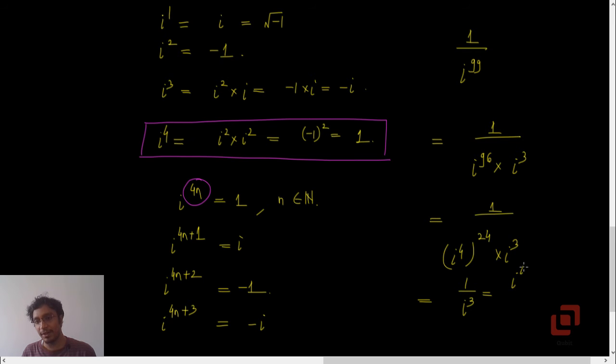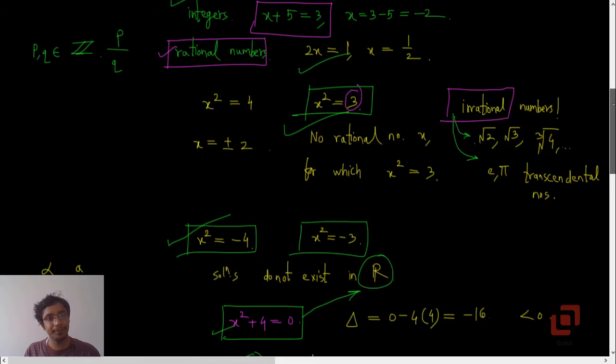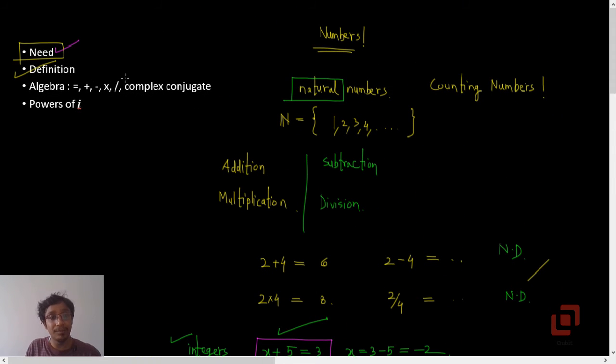Now you can simplify this by writing 1 as i raise to 99 is i itself, so based on this they may ask you a few sums. What else? Yeah, I missed two points. When are two complex numbers equal to each other? Two complex numbers are equal to each other if and only if their real parts are equal and their imaginary parts are equal.